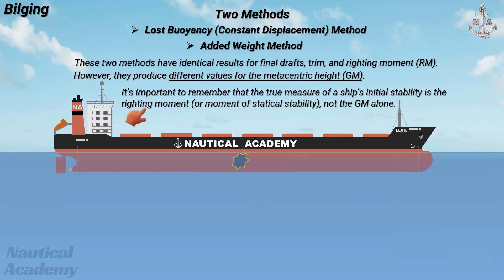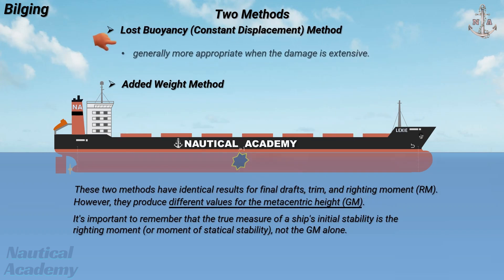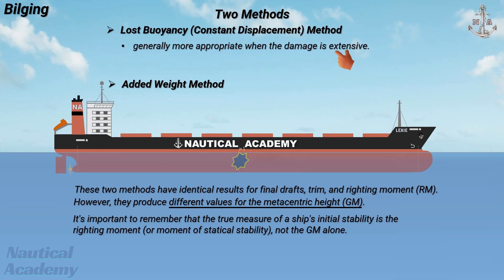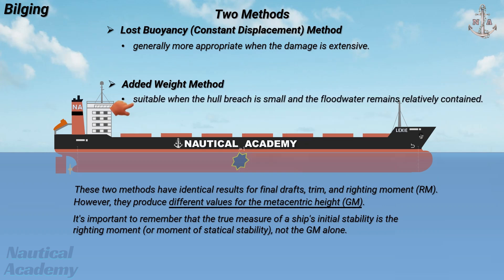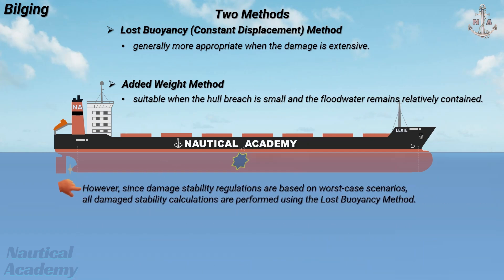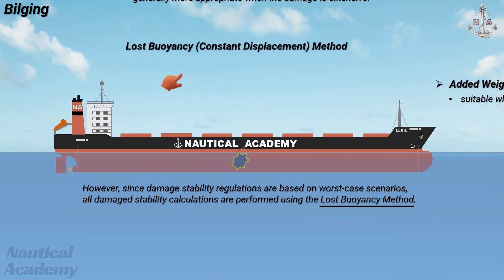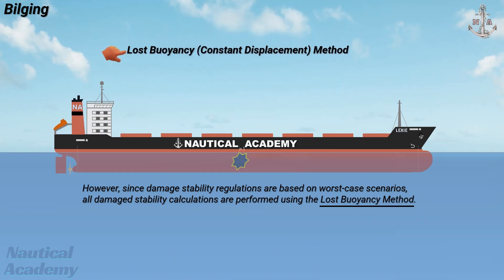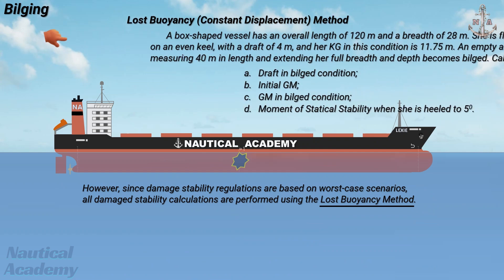It's important to remember that the true measure of a ship's initial stability is the righting moment or moment of statical stability, not the metacentric height alone. The lost buoyancy method is generally more appropriate when the damage is extensive; in contrast, the added weight method is more suitable when the hull breach is small and the flood water remains relatively contained. However, since damage stability regulations are based on worst-case scenarios, all damage stability calculations are performed using the lost buoyancy method. This is also the method recommended for examination purposes and the one used in this scenario.